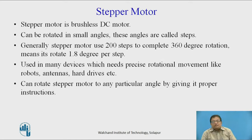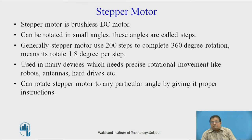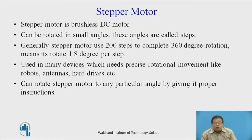The stepper motor is a brushless DC motor. It can be rotated in small angles, and these angles are called steps. Generally, the stepper motor uses 200 steps to complete the 360-degree revolution, meaning it rotates 1.8 degrees per step — that is, 360 divided by 200. The stepper motor is normally used in many devices where precise rotational movement is needed, like robots, antennas, hard drives, etc. A stepper motor can rotate at any particular angle by giving the proper instructions.